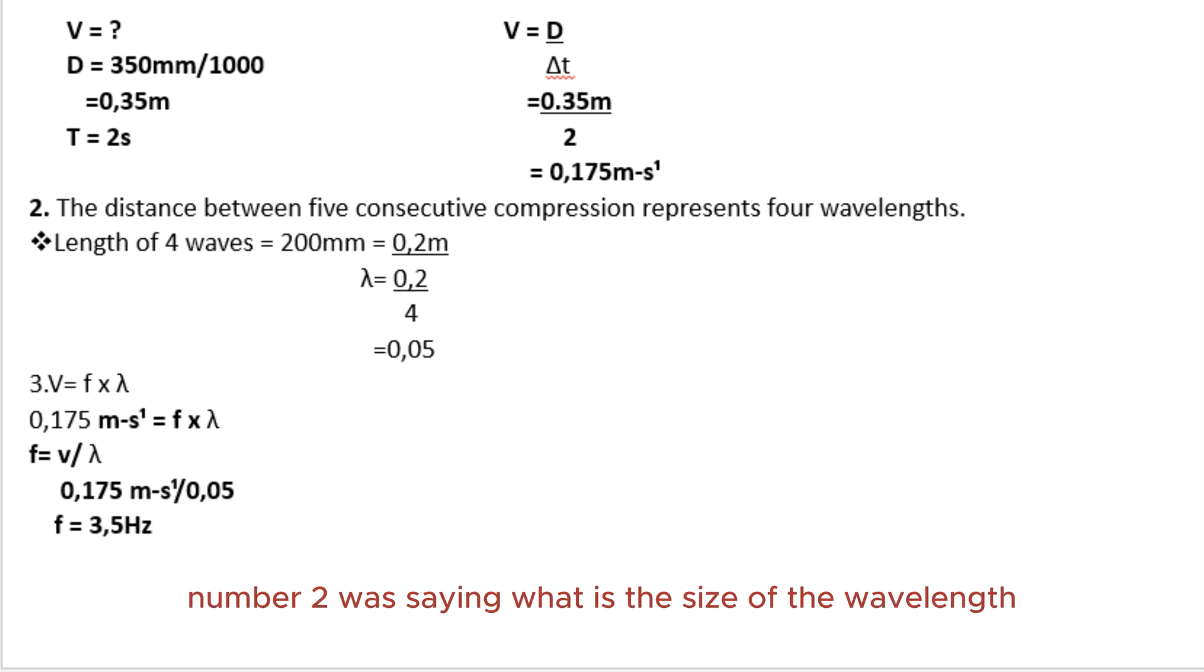Number two: what is the size of the wavelength? The distance between five consecutive compressions represents four wavelengths. If you want to check, you can use a diagram where you draw and check the number of wavelengths. We have four wavelengths covering a distance of 200mm, which is 0.2m. So we divide that by 4 to get the distance of one wavelength, which equals 0.05m.